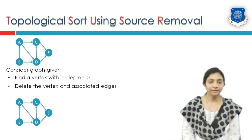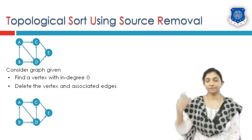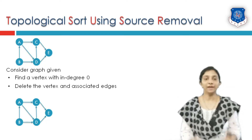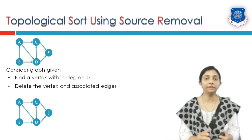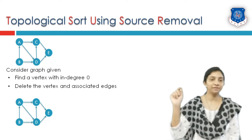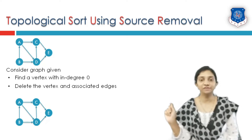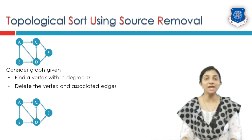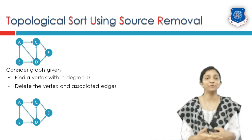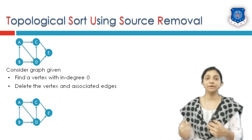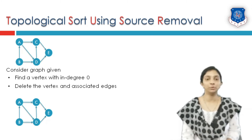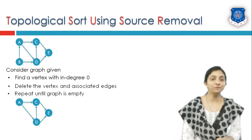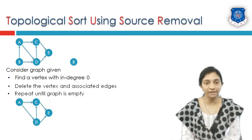Now look at this carefully. Out of these 5 vertices in the graph, we have to find any vertex which has no incoming edges. Start from A — there is an incoming edge from C. E is also having an incoming edge. D is also having an incoming edge. But B is a vertex which is only having outgoing edges and there are no incoming edges. So vertex B is having in-degree equal to 0. We have found this vertex, so we are going to remove it.